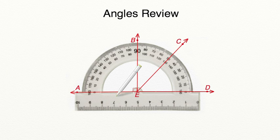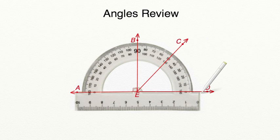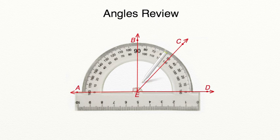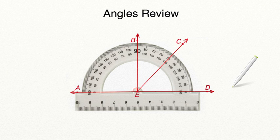Now here, we have an angle that is on a straight line. An angle on a straight line has a measure of 180 degrees. So if we were to add up angles A-E-B, angle B-E-C, and angle C-E-D, the sum of these three angles would equal 180 degrees.